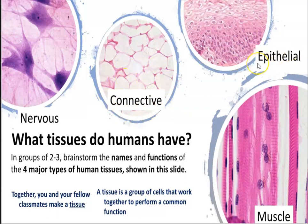We have epithelial tissue — the tissues that line our body, our inner and outer surfaces, our skin, and organs. And we have muscle tissue in three types: skeletal muscle, which makes up the muscles of our skeletal system; cardiac muscle, which makes up the walls of the heart; and smooth muscle, which lines the hollow organs and different structures within our body.